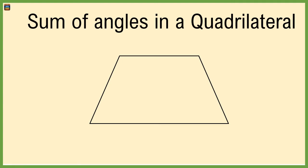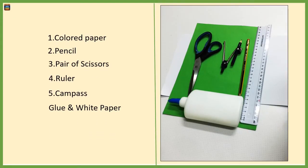Hello guys, in today's activity we want to show that the sum of angles in any quadrilateral is 360 degrees. You need to grab a colored paper, a pencil, a pair of scissors, a ruler, a compass, and you may also need glue and white paper.